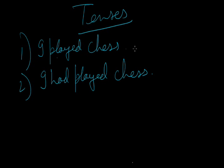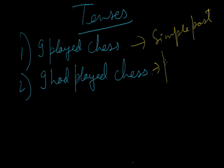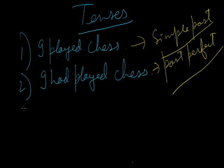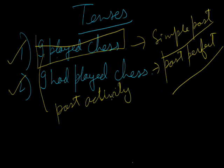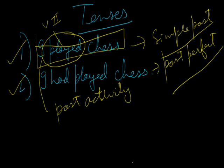If we go by the tenses, this one is in simple past and this one is in past perfect tense. The question is which of them is grammatically correct? Are both correct, or both wrong? If we go with the initial sentence 'I played chess', it shows a past activity. The time is not given to us. This action happened in the past because we have used the second form of the verb, that is 'played'. I played chess — it was a past action, the action happened in the past time.